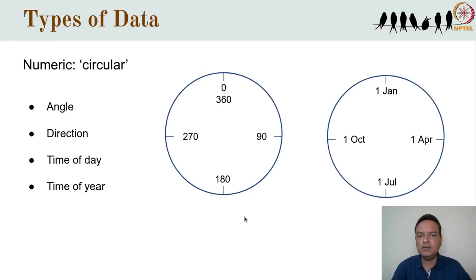Another key point to remember is that in circular data, the numbers wrap around. This means that the difference in angle or direction between 350 degrees and 10 degrees is not 340 degrees — rather it's only 20 degrees. So beware of mechanically performing the usual operations on circular data and treating them as though they are arranged on the standard linear number line.